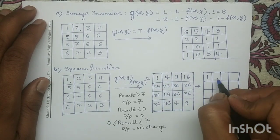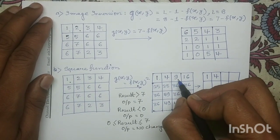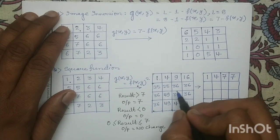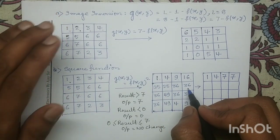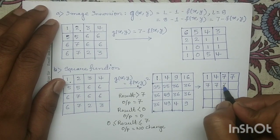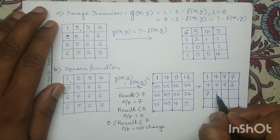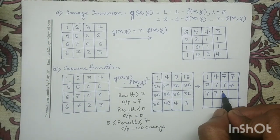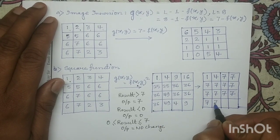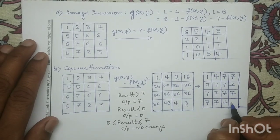Applying this transformation: pixel value 1 lies between 0 to 7, so it is 1. Similarly 4 is also 4. But 9 is greater than 7, so I write 7. Similarly 16 is also greater than 7, so I write 7. For 25, 36, 36 — all numbers are greater than 7, so in this row all pixels have intensity value 7. For 36 and 49, also greater than 7, I write 7. For pixel value 4, it lies between 0 to 7, so I write 4. And 9 is greater than 7, so I write 7.